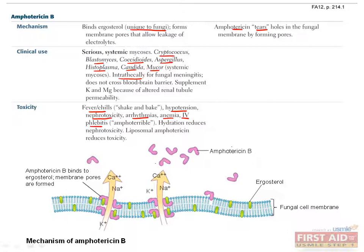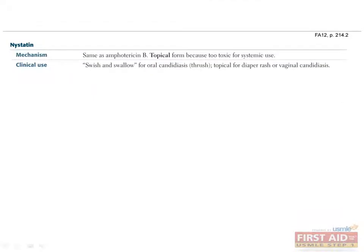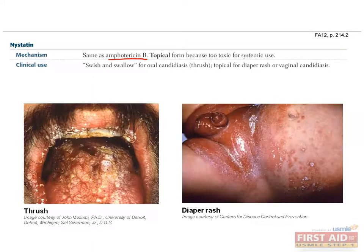Amphotericin delivered in a liposomal depot has fewer toxic side effects. Nystatin, which has the same mechanism of action as amphotericin B, is limited to topical use because of its extreme toxicity when used systemically. Topical indications include oral candidiasis as a swish-and-swallow preparation, as well as diaper rash and vulvovaginal candidiasis.